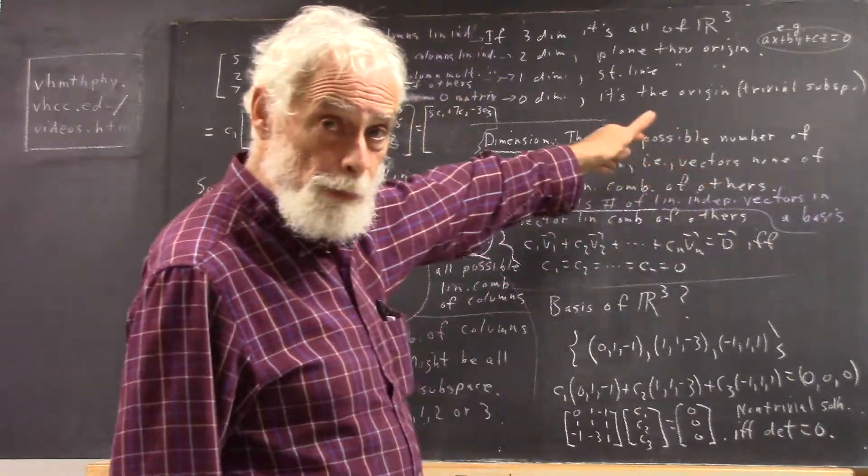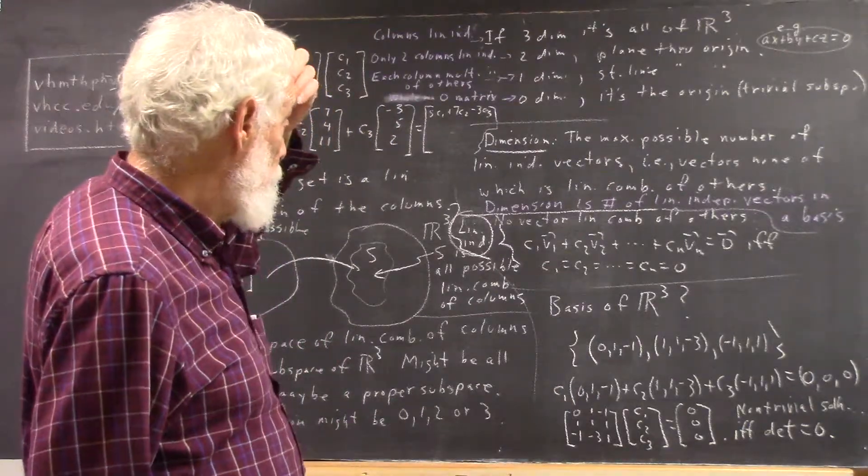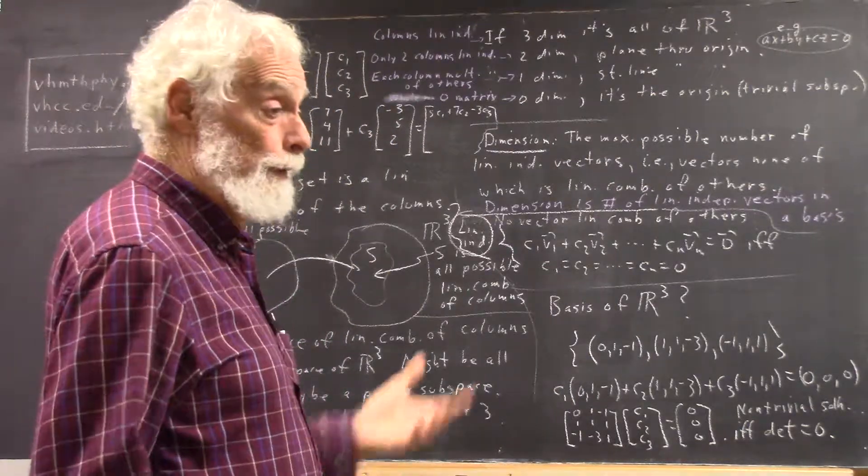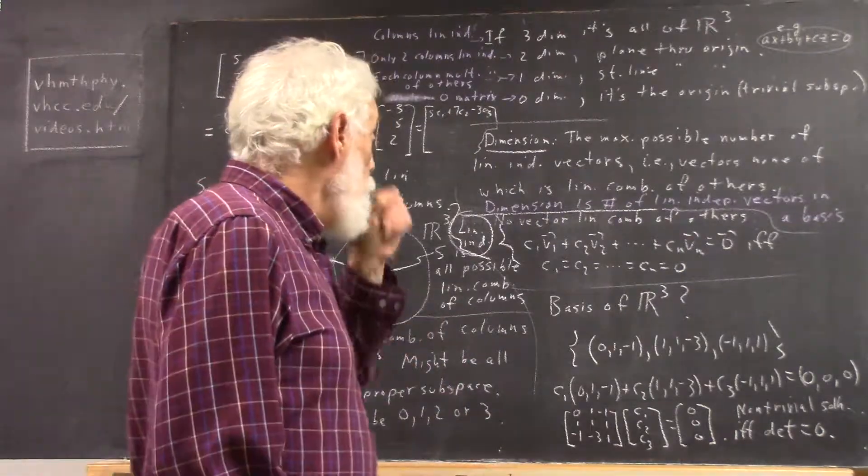Linear independence means that no vector is a linear combination of the others. What I'm saying here should be review, but we take that with a grain of salt because people don't always do what they're supposed to do. But that's no excuse. You need to do it.